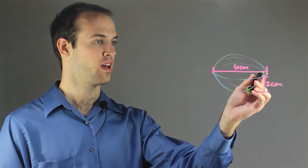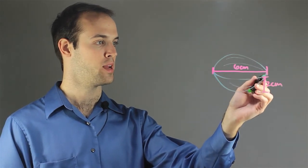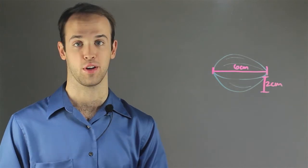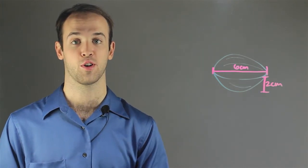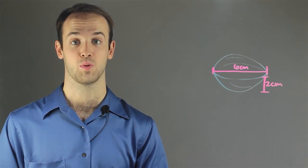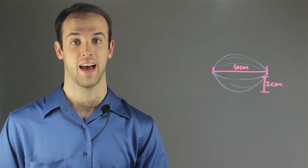We have the length at the widest point to be 6 centimeters and the depth to be 2 centimeters, and we're told to figure out the volume. Unfortunately there's no formula to figure out the volume of a seashell, but we can use what we already know about volume to estimate.